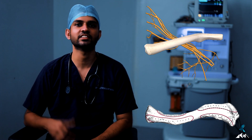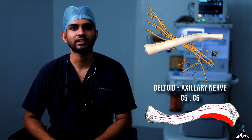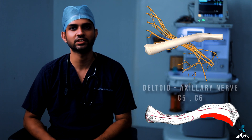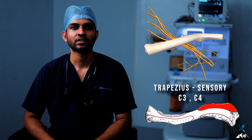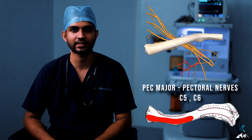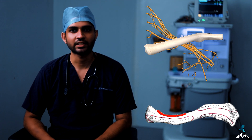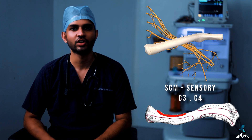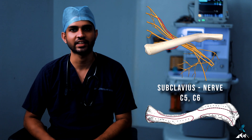We need to know the muscles attached to the clavicle to understand the relevant nerve supply. At the lateral end, the anterior part has the deltoid, supplied by the axillary nerve with root value C5/C6, and the posterior part has the trapezius, with motor supply from the spinal accessory nerve and sensory supply from C3 and C4. At the medial end, the anterior part has the pectoralis major clavicular head, supplied by the pectoral nerves at C5/C6; the posterior part has the sternocleidomastoid, with sensory supply from C3/C4. Inferiorly, the subclavius muscle is supplied by the nerve to subclavius, a branch of the upper trunk of the brachial plexus, root value C5 and C6.